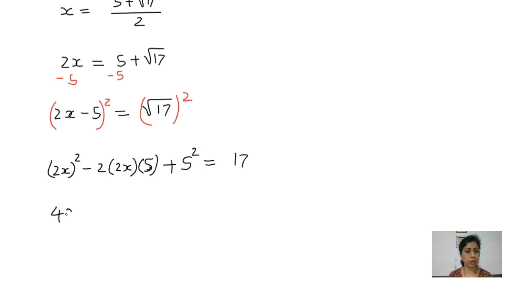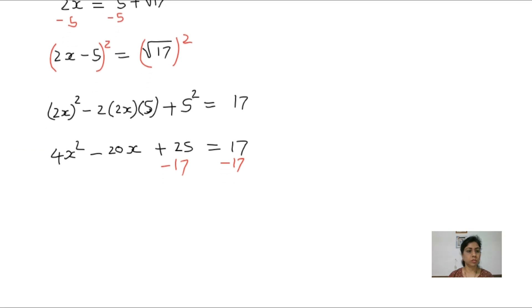This is 4x square minus 2 times 2 times 5 is 20x plus 25 equals 17. Both sides subtract 17. So 4x square minus 20x plus 25 minus 17, 8 equals 0.